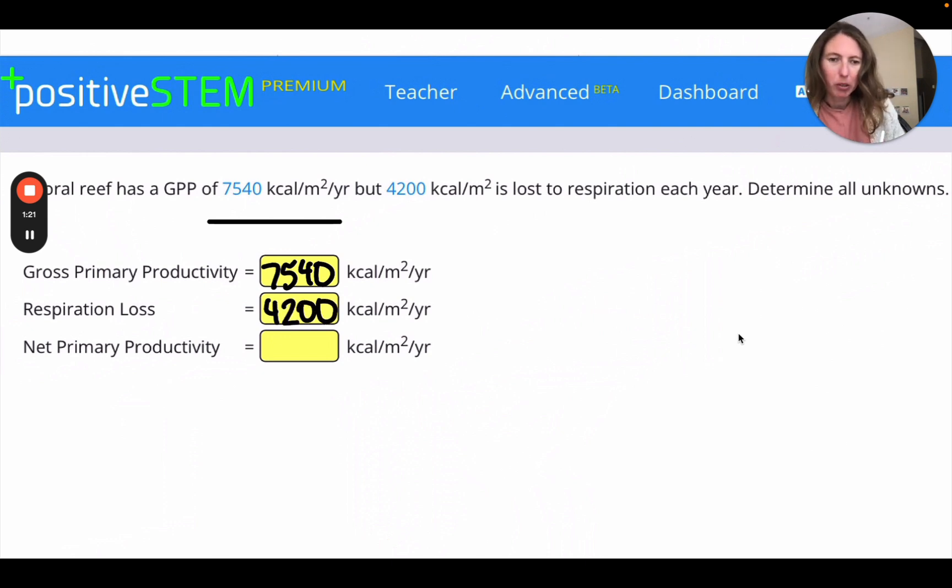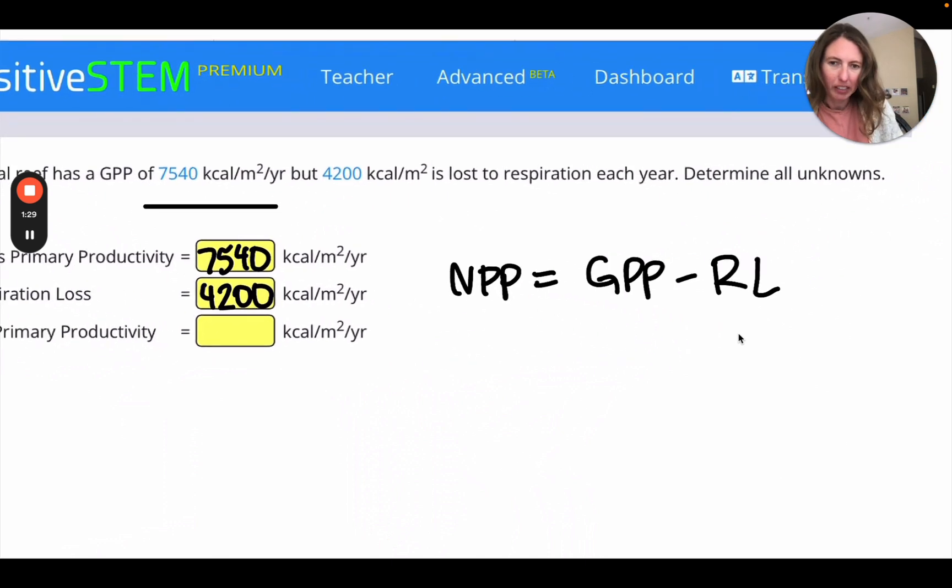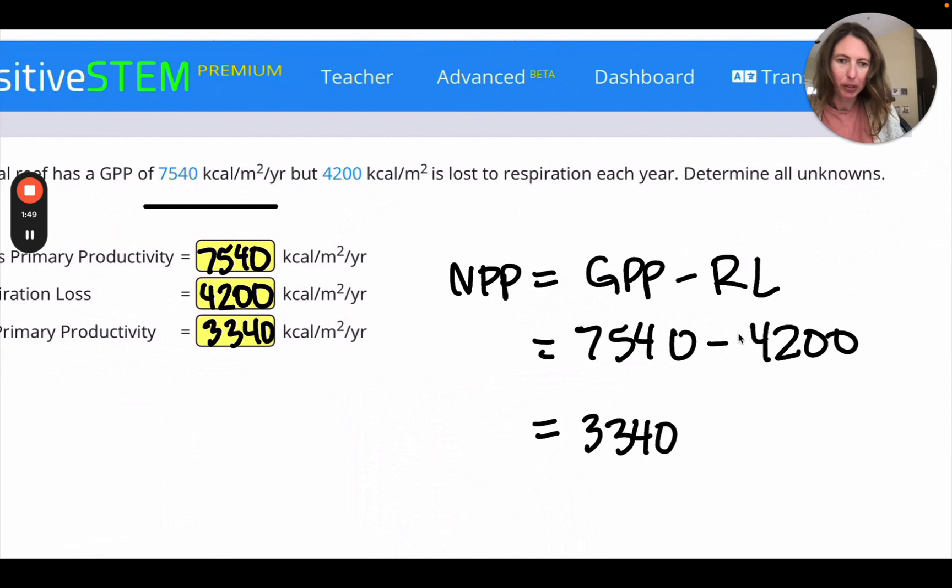So this one is the most straightforward. To find NPP, it's the gross primary productivity minus the loss. So we're just going to put in those numbers. And so that's 3,340 kilocalories per meter squared per year.